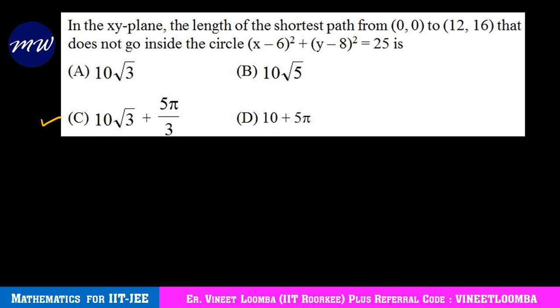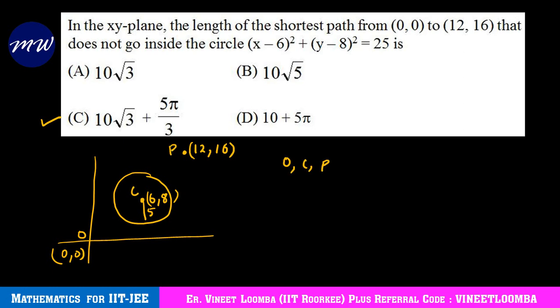So let's see how this problem is presenting itself. We have the origin here, we have the point (12,16), and what else do we have is a circle which is centered at (6,8) and the radius of the circle is 5. Now the first observation is that if this point is O, this point is C, and this point is P, then O, C and P are all collinear.